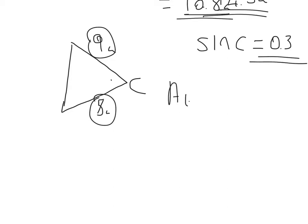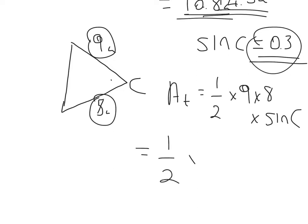So area of the triangle would be a half times 9 times 8 times sine c. Now we know that sine c is 0.3, so we can just rewrite that as half times 9 times 8 times 0.3.